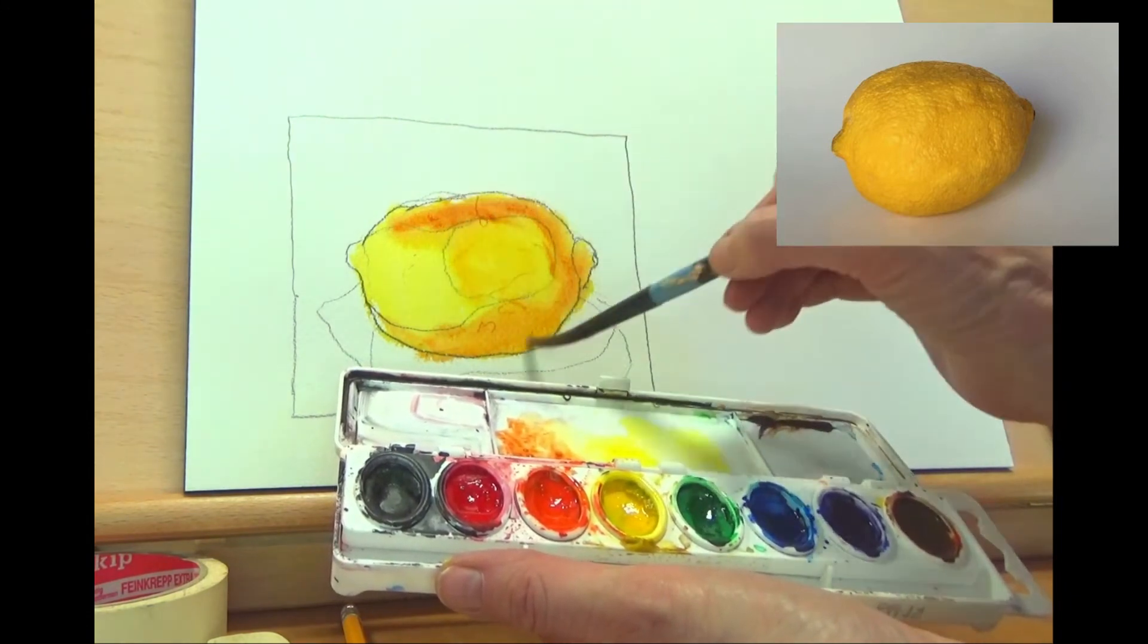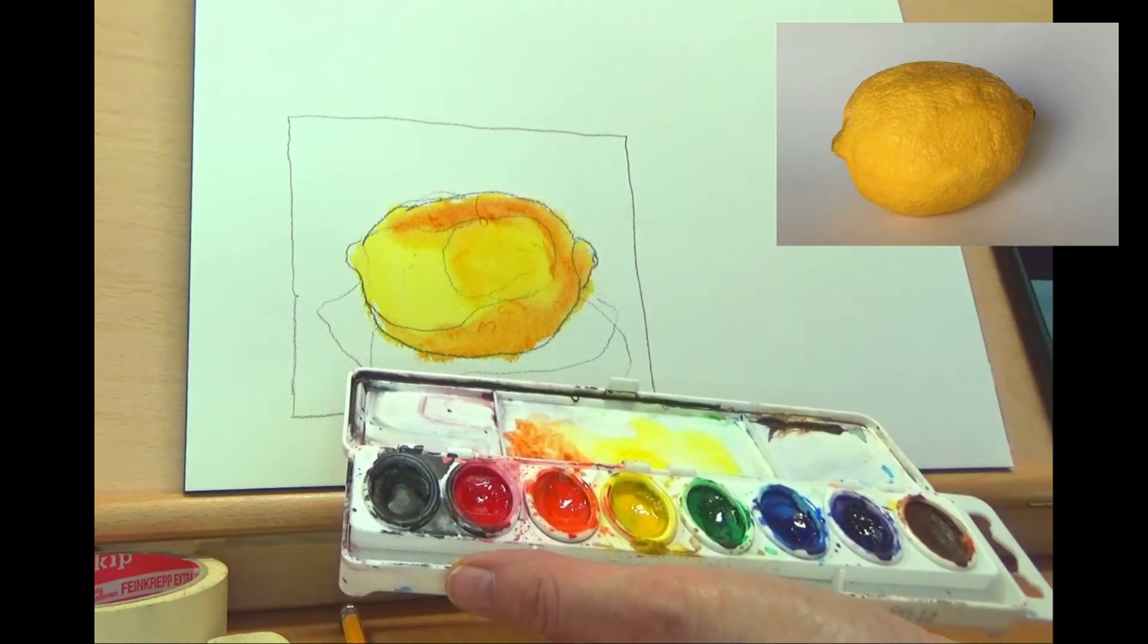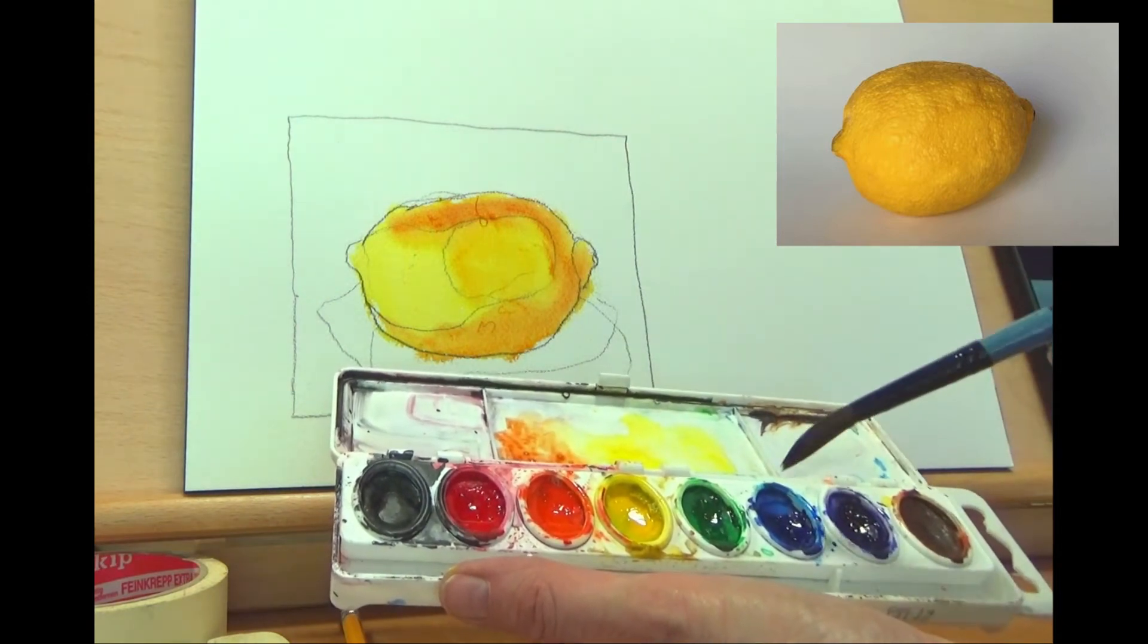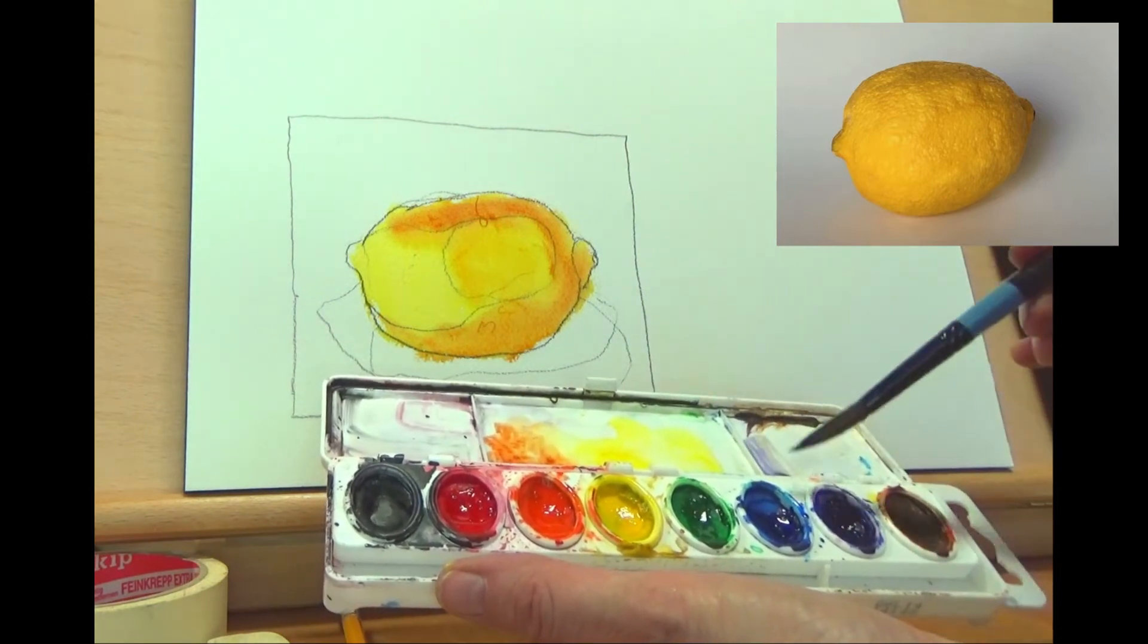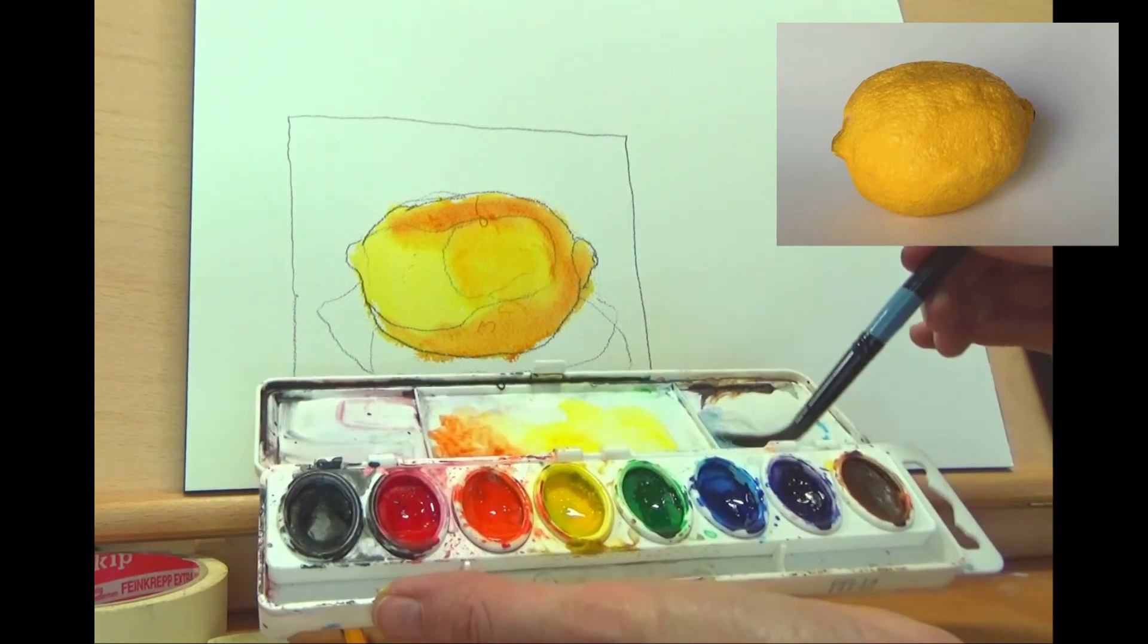Now I want to kind of talk a little bit about the shadows. I always go with a cool color for shadows, so I just did like a blue-violet. This is going to bleed together.